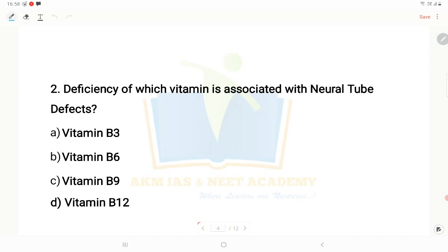Second: Deficiency of which vitamin is associated with neural tube defects? Yes, you could have guessed it - vitamin B9, option C. Vitamin B9 is also called folic acid. You should definitely know the vitamin B classifications and their names.